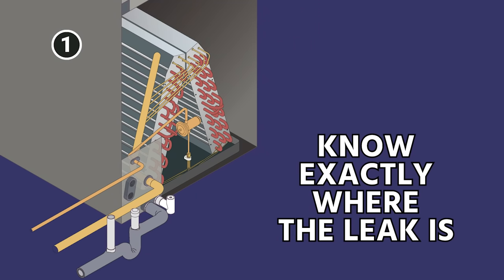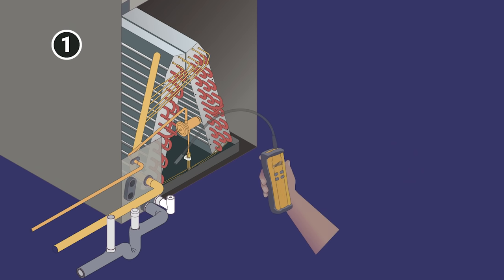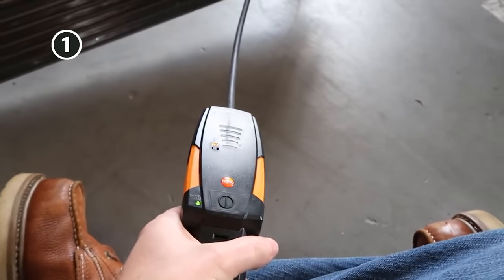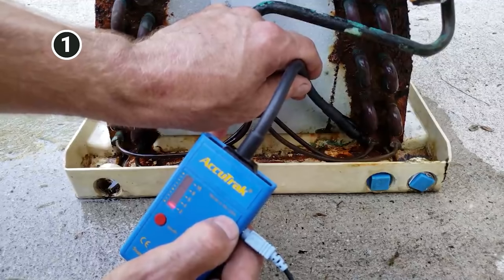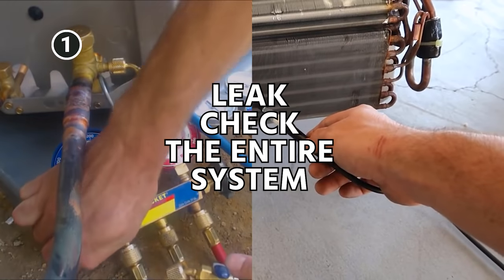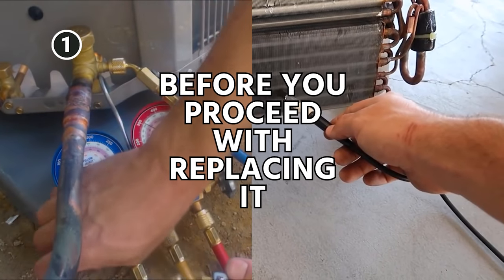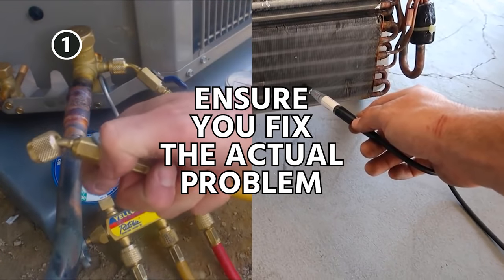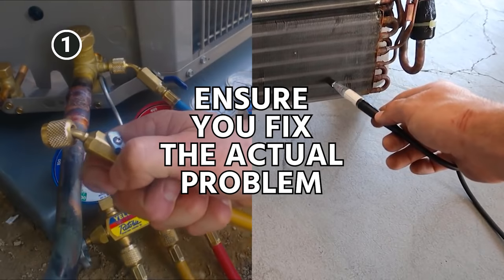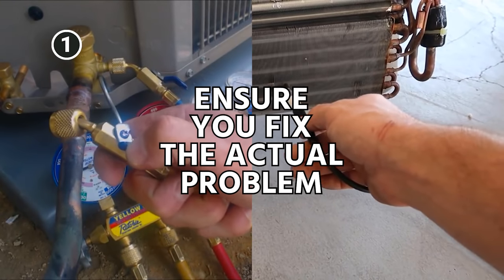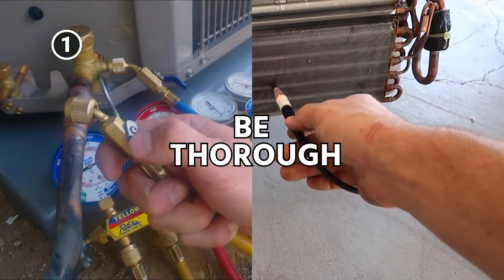So not only confirm that you know that the evaporator coil is leaking and where it's leaking with a good quality leak detector, like a heated diode electronic or maybe even an ultrasonic, but then also leak check the entire rest of the system before you proceed with replacing it to ensure that you're not going to be giving the customer a very expensive repair that won't actually fix the problem. So be very thorough in re-diagnosing.